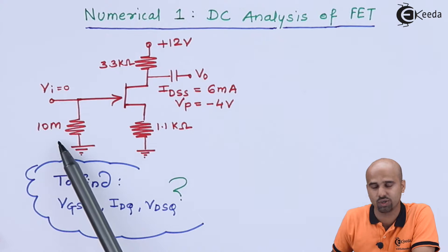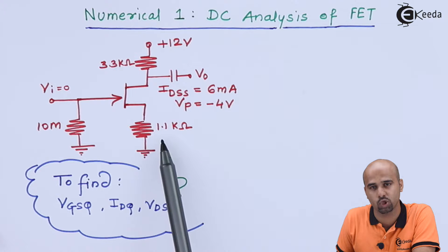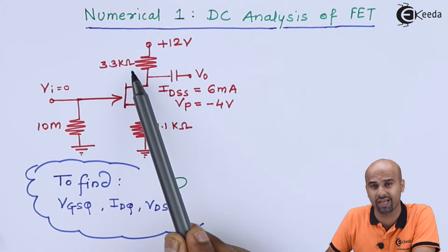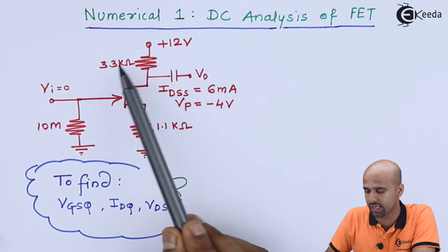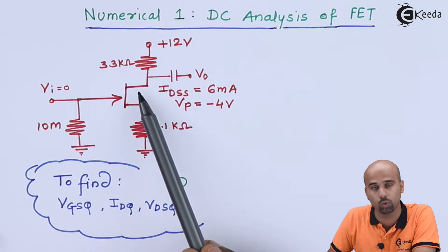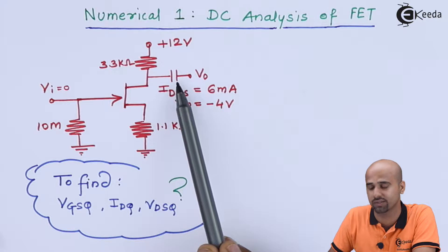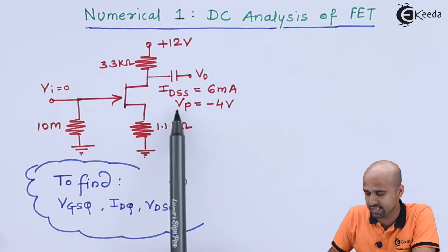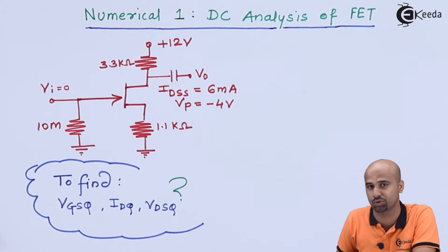Here this is the first numerical and that is why we have a simple numerical. 10 megaohm is your gate resistance, 1.1 kiloohm is your source resistance, and 3.3 kiloohm is your drain resistance. Plus 12 volt battery is externally connected to attach 3.3 kiloohm towards drain side of FET. Capacitor is placed to isolate the value of output load and IDSS which is given as 6 milliampere drain to source saturation current.